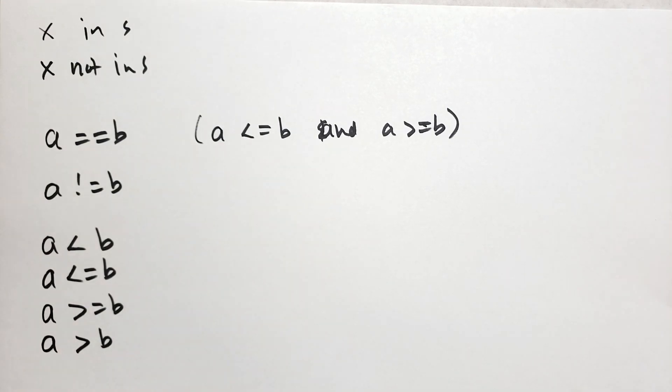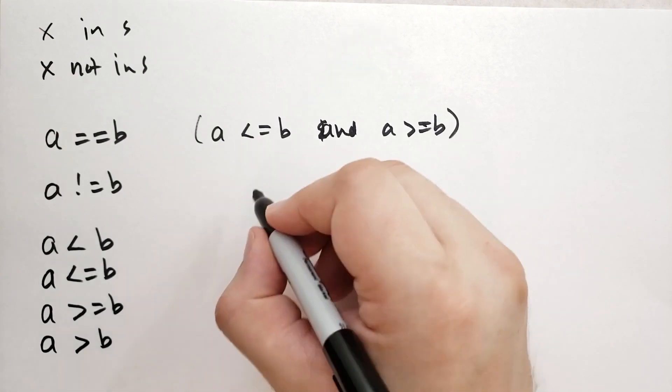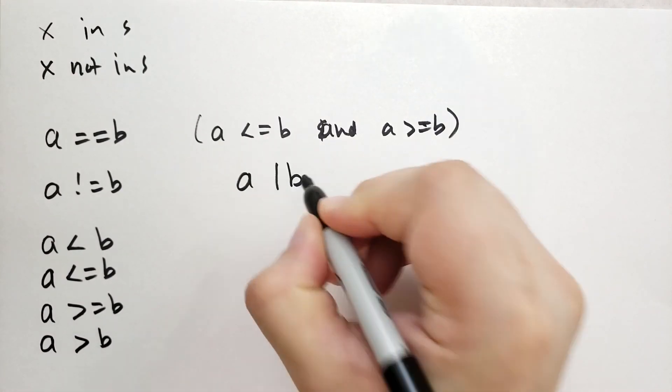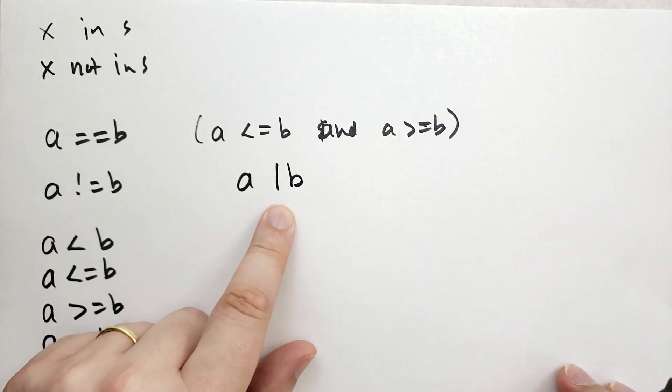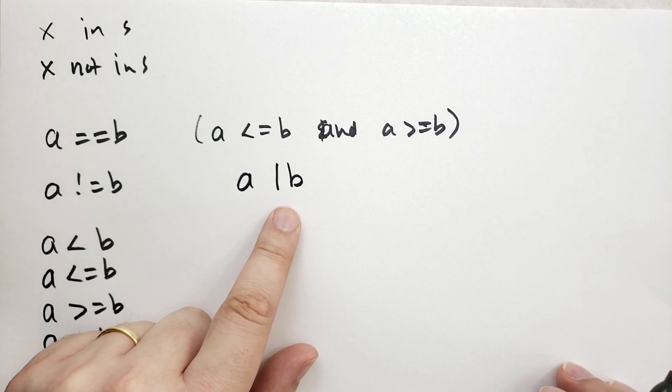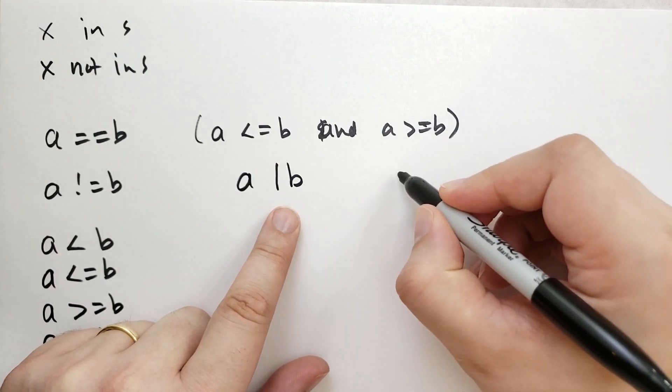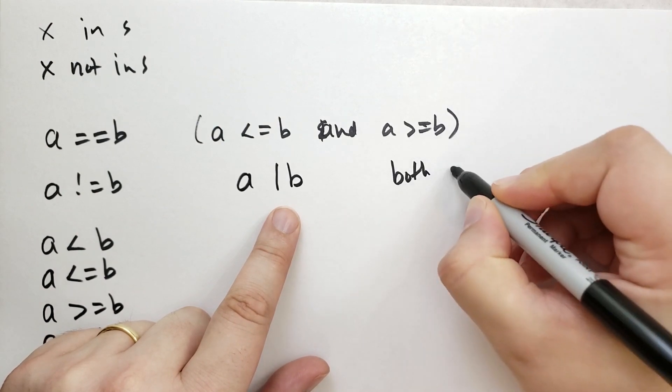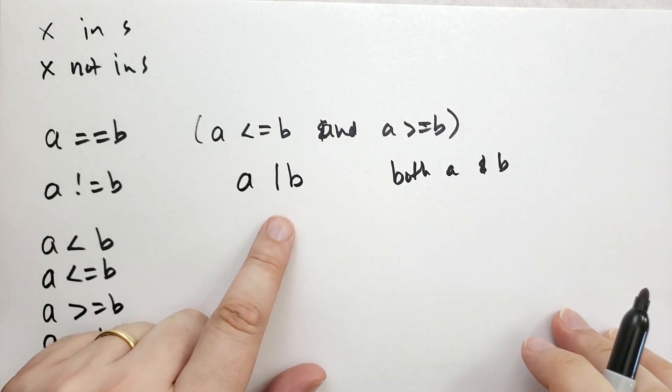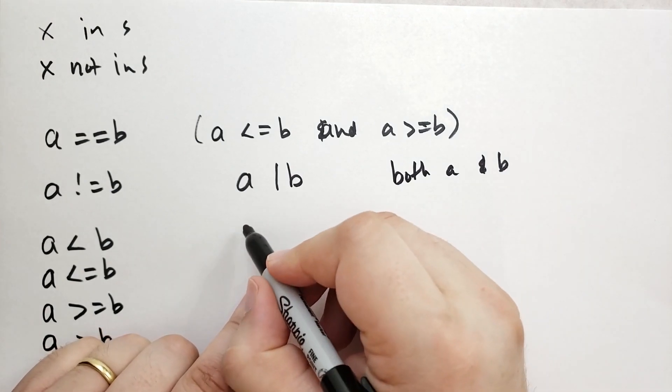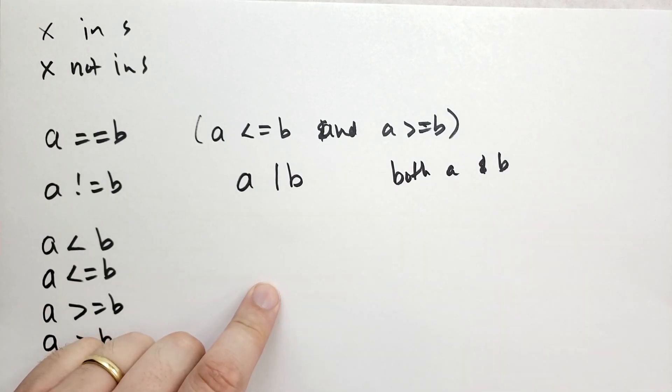OK, there are some bitwise operators as well. So we have a pipe b. So this would be a or b if we're doing bitwise binary operations. But what this one says is this one creates a new set with elements from both a and b. OK, so the set could be larger than a or b if a or b isn't equal to each other.